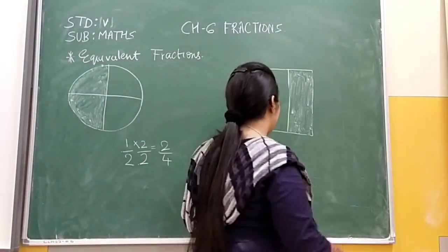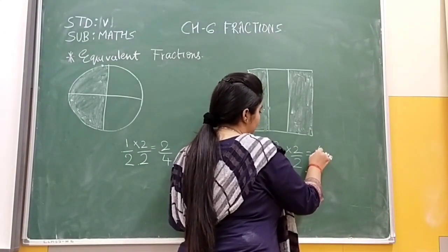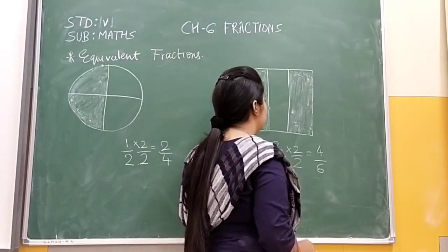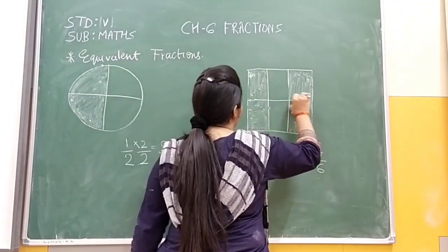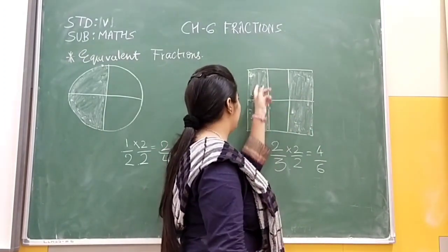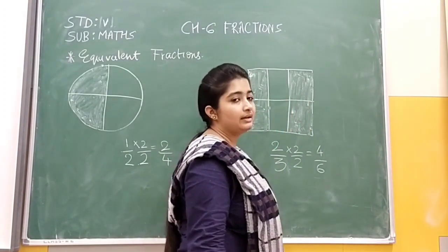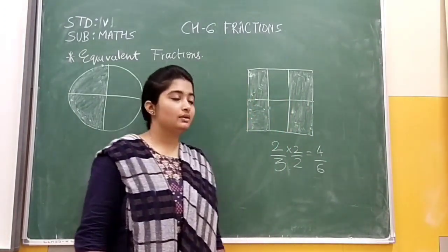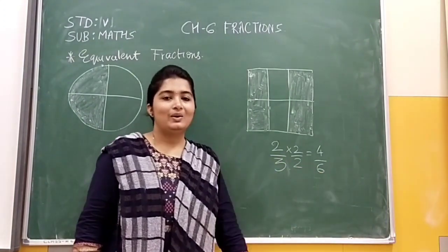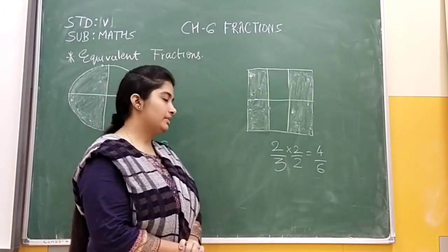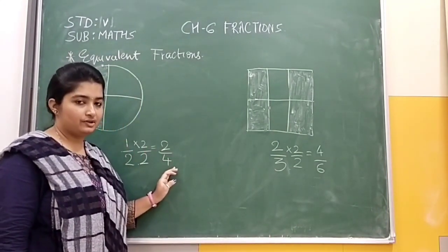For the square, if I multiply both top and bottom by 2, that will be four upon six. To represent it, just draw a line between them. So there are one, two, three and four parts colored out of six. Our fraction is four upon six. So two upon four is one equivalent fraction and four upon six is another equivalent fraction.